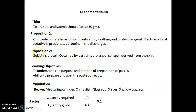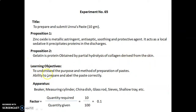Proposition 2: gelatin is a protein obtained by the partial hydrolysis of collagen derived from the skin. The learning objectives are to understand the purpose and method of preparation of paste, and to develop the ability to prepare and label the paste correctly.